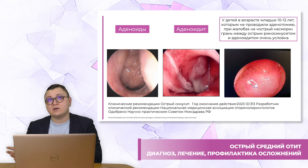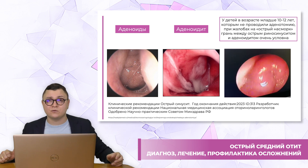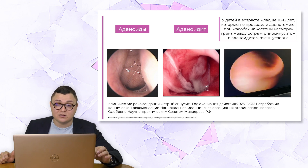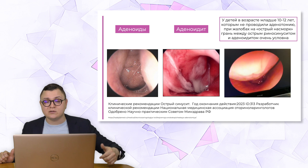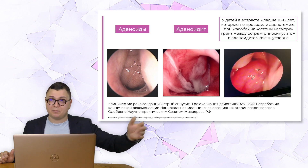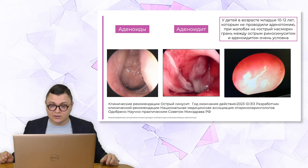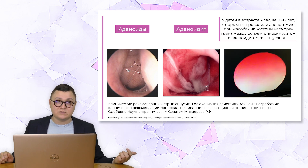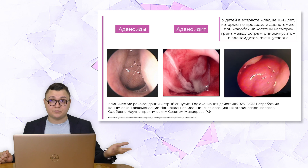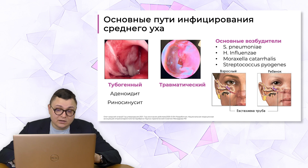Правомочно ставить диагноз обострения хронического аденоидита с появлением вновь выделяемого. У детей слуховая труба расположена более горизонтально, она более широкая, и поэтому инфицированная слизь легче попадает в барабанную полость через слуховую трубу, и она уже не выводится, потому что цилиарный клиренс повреждён. На слайде видно эндоскопическое исследование, которое показывает воспалённую глоточную миндалину и фактически полную обструкцию слуховой трубы, откуда инфицированная слизь легко попадает в барабанную полость, при этом вентиляция уже нарушена.